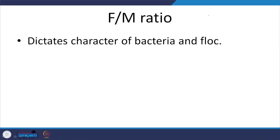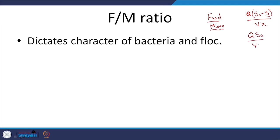Food to microorganism ratio: food can be based on S0, what is coming in, or what is coming in minus going out, depending on which textbook you look at. Microorganisms refers to those in the system, or you can have QS0 divided by Vx. That is one aspect to keep in mind.